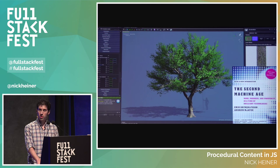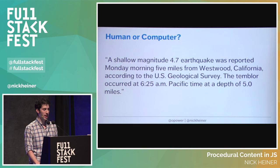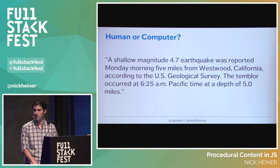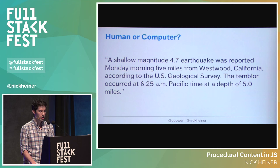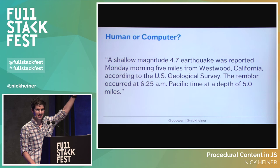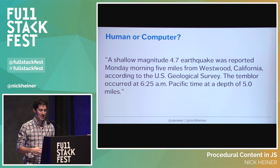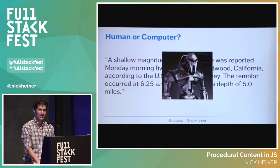It's not just for games — a lot of text is generated by computers as well. The New York Times has an interactive quiz where they put up snippets of text and ask you if it was written by a human or a computer. I got 50% right when I took it, meaning I'm no better than a coin toss. Here's the first one: 'A shallow magnitude 4.7 earthquake was reported Monday morning five miles from Westwood, California, according to the US Geological Survey. The trembler occurred at 6:25 Pacific time at a depth of 5.0 miles.' This was generated by a computer.